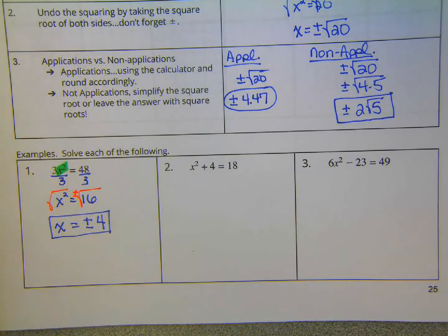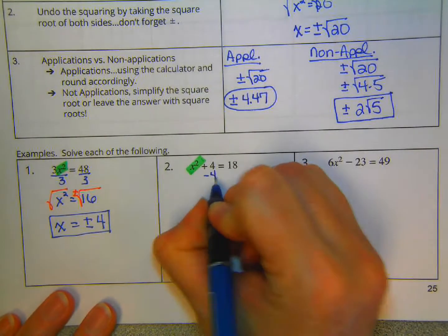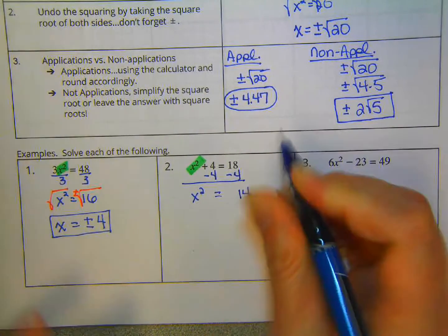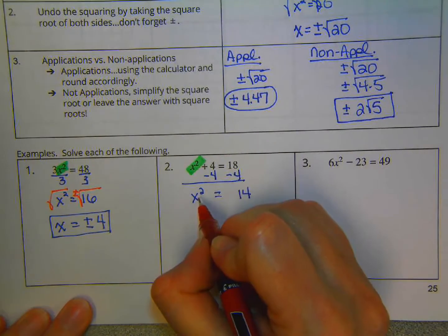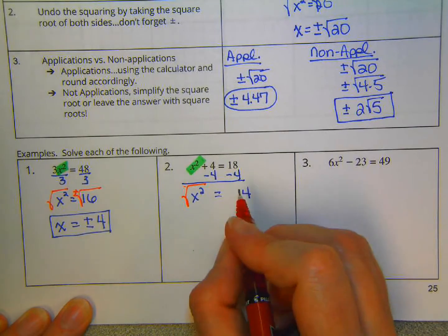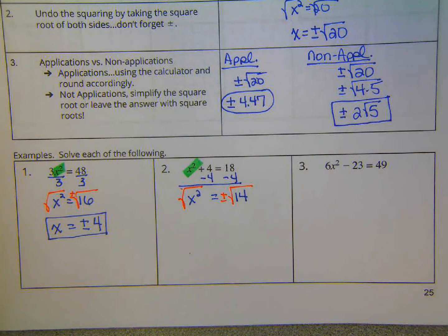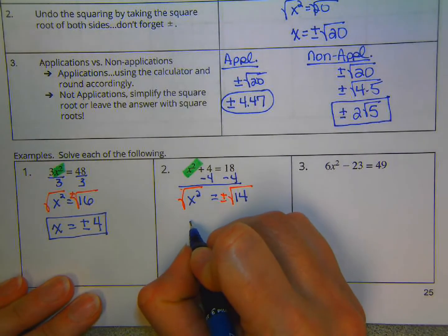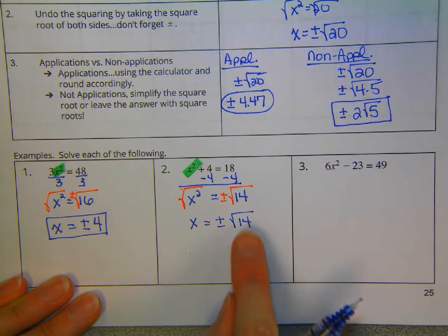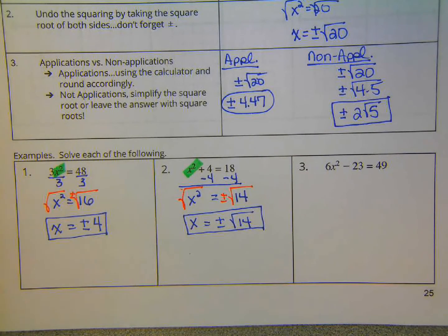On this one right here, we want to isolate the x squared. So what's the first step? We're going to subtract 4. x squared then is equal to 14. Now, the second step is to undo the squaring by taking the square root because the squaring and square root cancel. And then we're going to square root the 14. Don't forget the plus or minus. Lots of kids do. Don't let you be that person. So we now have x equals plus or minus the square root of 14. There is no perfect square that divides 14. So it can't be simplified anymore. So that's the final answer.